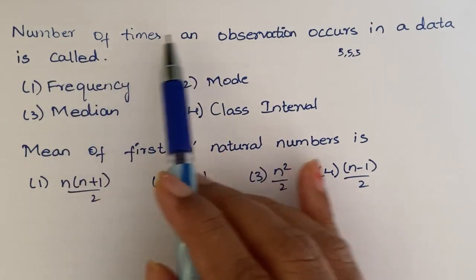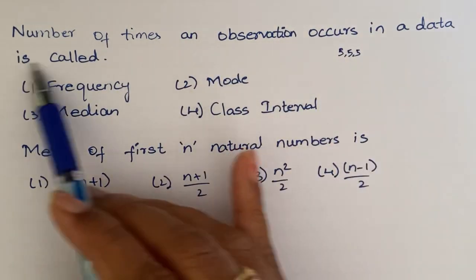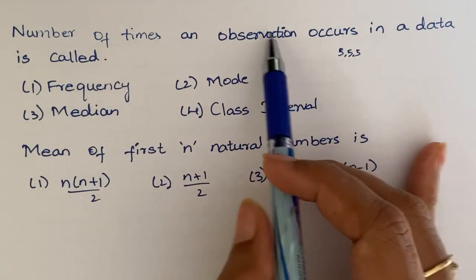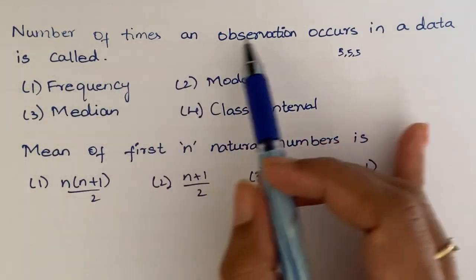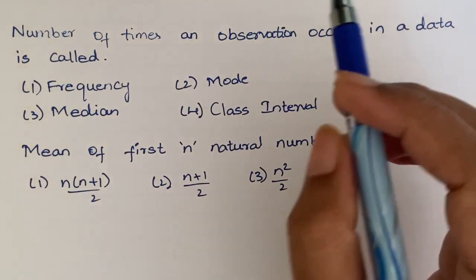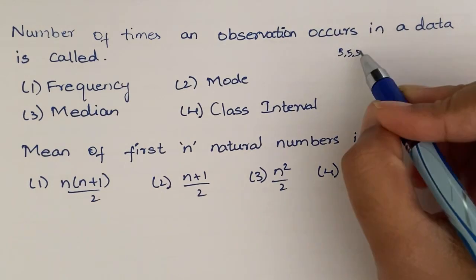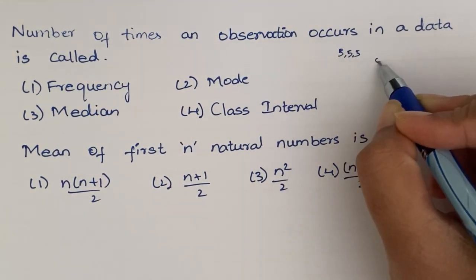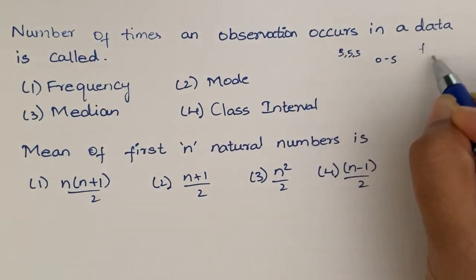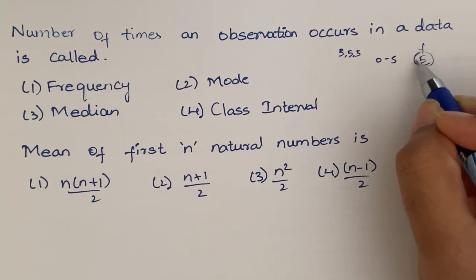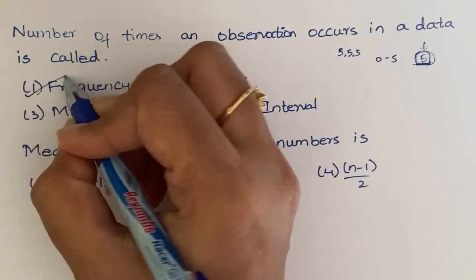Number of times an observation occurs in a data is called? I will tell you, I have already asked the frequency distribution. Here I have some class interval, 0 to 5. Here I have some frequency, some 5 or 6. So, this is the number of times an observation is called frequency. So, this is frequency.